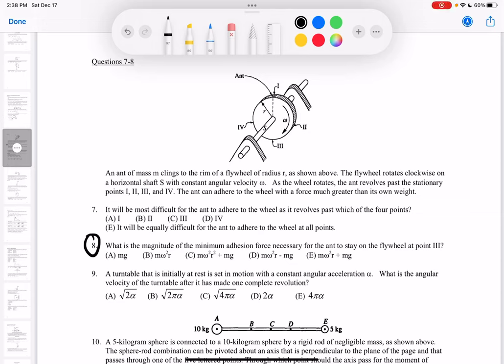Hello, let's look at number 8. This is very similar to number 7. We have this ant clinging to this wheel as it goes in a circle.